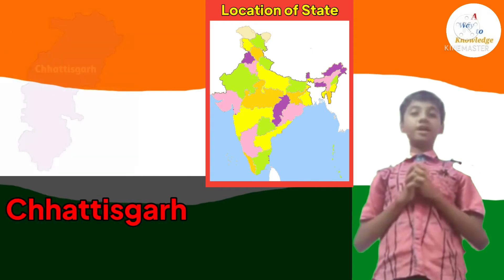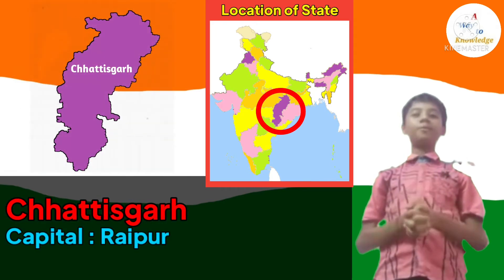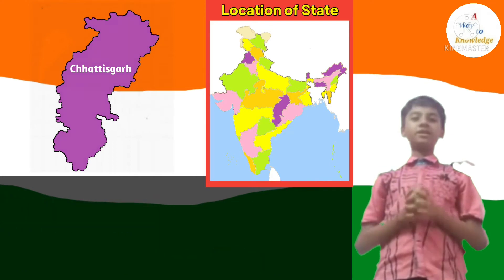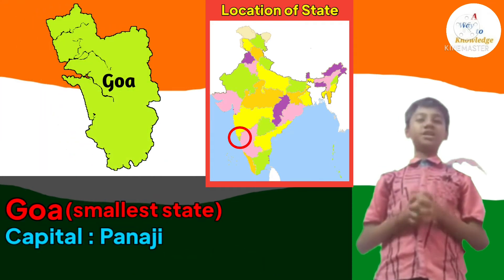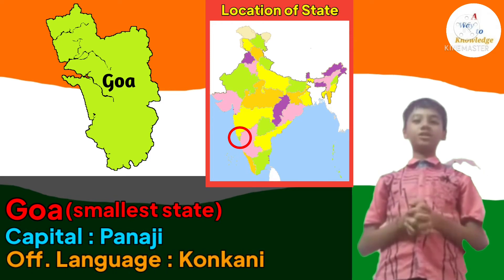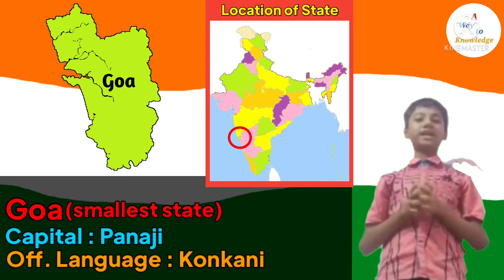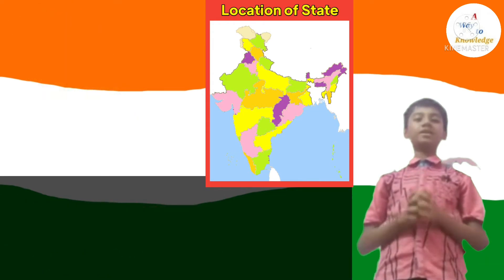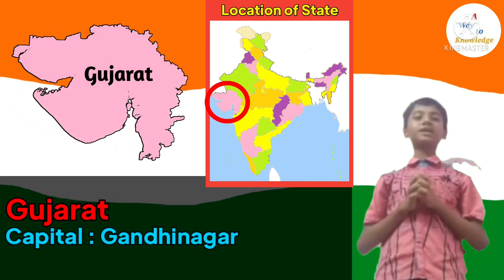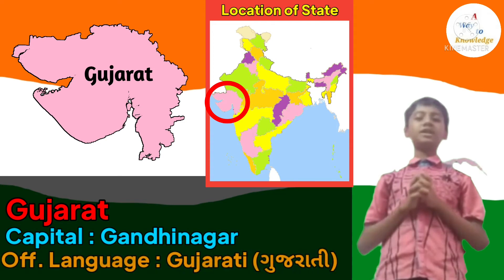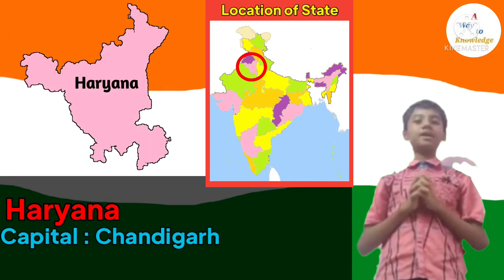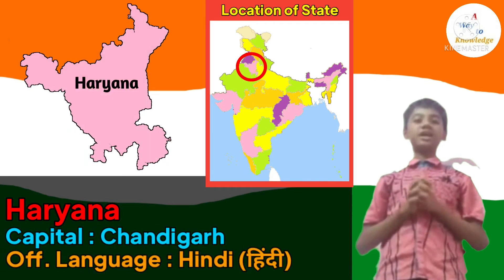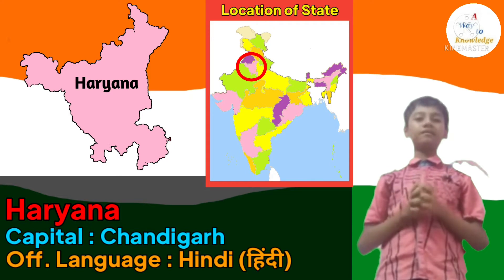State number 5: Chhattisgarh. Its capital is Raipur and its official language is Hindi. State number 6: Goa. Its capital is Panji and Konkani is its official language. Goa is the smallest state of India. State number 7: Gujarat. Its capital is Gandhinagar and Gujarati is its official language. State number 8: Haryana. Its capital is Chandigarh and its official language is Hindi. Haryana shares its capital Chandigarh with the state Punjab.